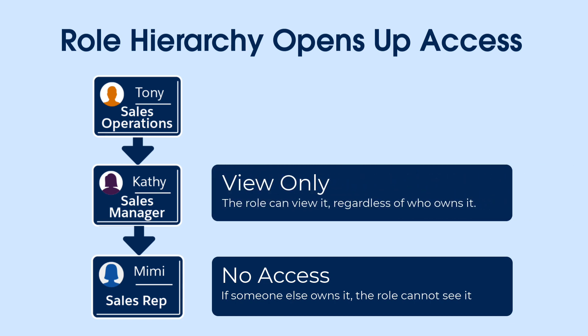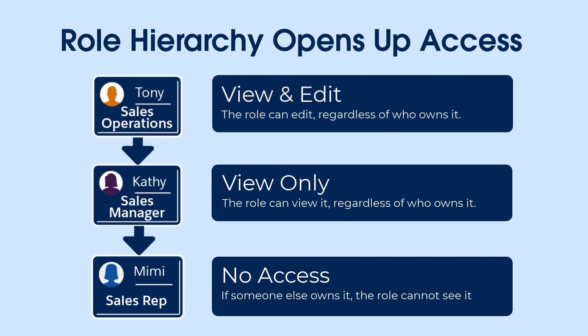View Only: people in a role can view opportunities associated with accounts they own, regardless of who owns the opportunities. We'll choose this option for the sales manager role. Or we can choose View and Edit: those in a role can view and edit opportunities associated with accounts they own, regardless of who owns the opportunities. This is the option we'll pick for the sales ops role.